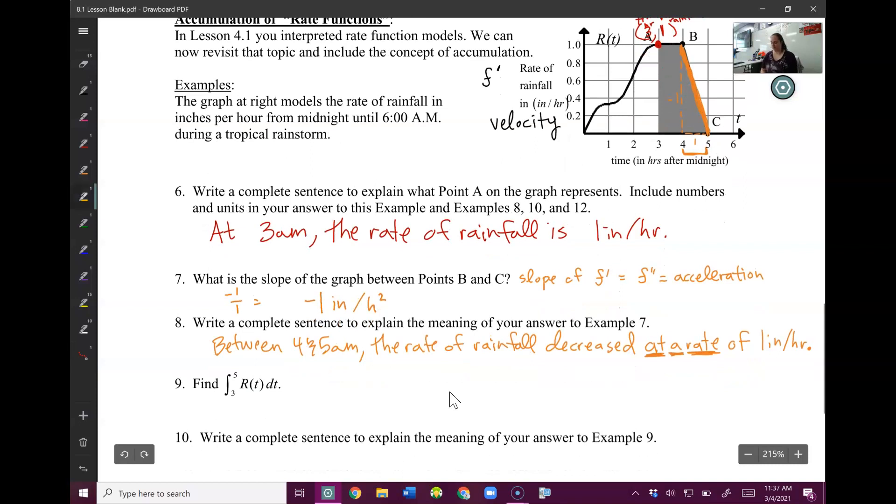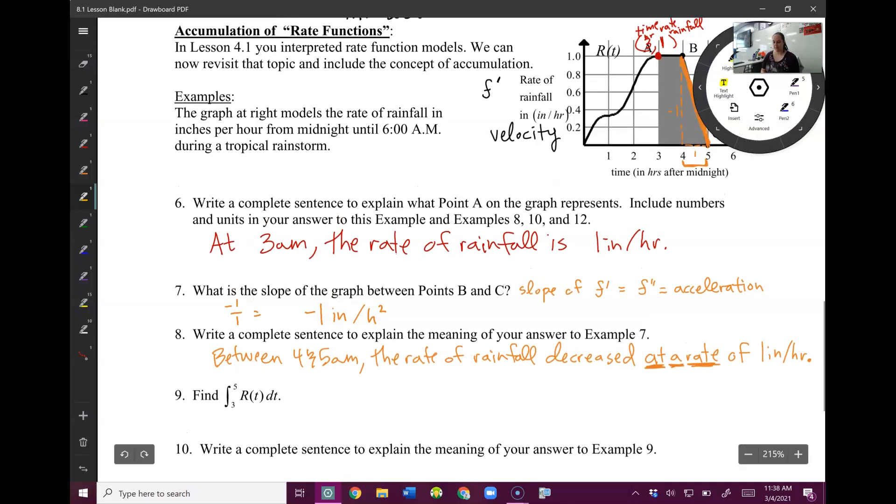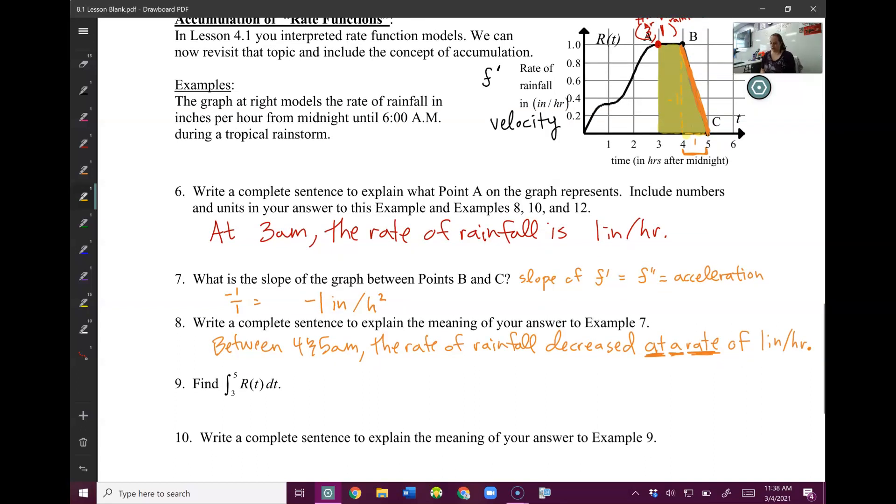Okay, question 9. Find the integral from 3 to 5. So let's highlight what this is. I want to find all of this. Area under the curve from 3 to 5. Well, that looks like a rectangle and a triangle. So the rectangle is going to be length times width, 1 times 1, plus this triangle will be 1 half times 1 times 1. So 1 plus 1 half is going to be 3 halves. Now let's think of our units.